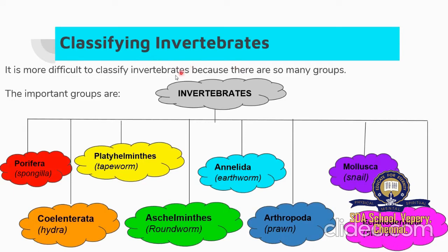Classifying Invertebrates is more difficult because there are so many groups. The important groups we are going to see in today's class are: Porifera, Platyhelminthes, Annelida, Mollusca, Cnidaria, Nematoda, Arthropoda, and Echinodermata.